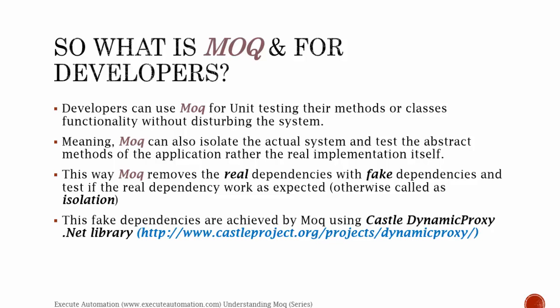Mock removes the real dependencies with fake dependencies and tests if the real dependency works as expected — otherwise called isolation. These fake dependencies are achieved by Mock using the Castle DynamicProxy .NET library. This is the power of Mock, where it removes real dependencies with fake dependencies, and using that, you can test any application you want.